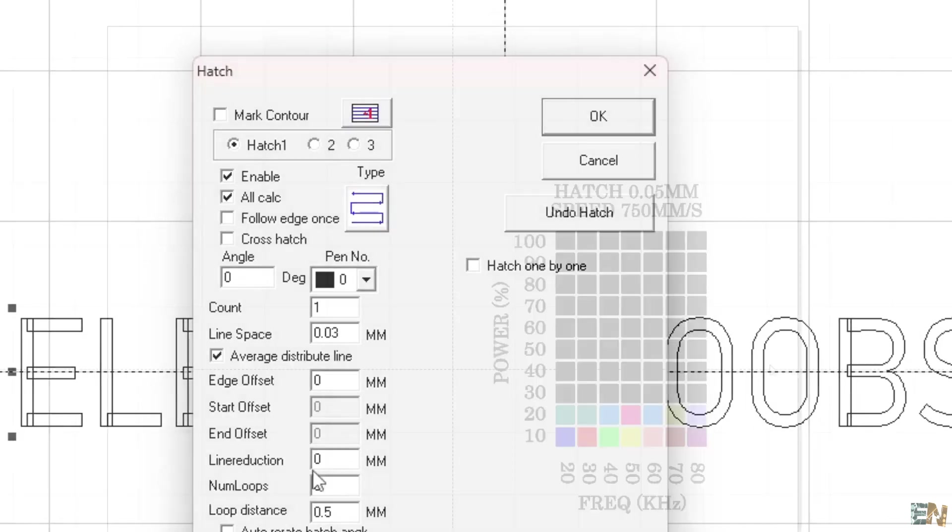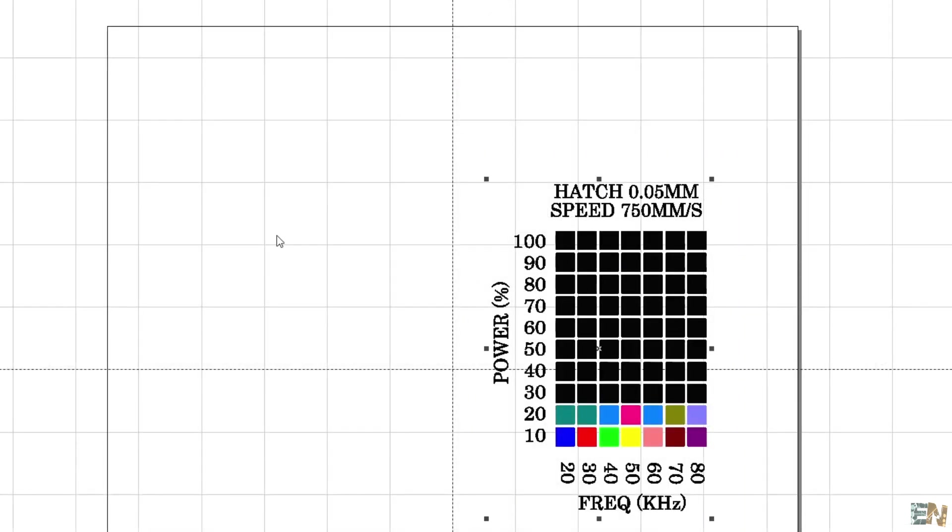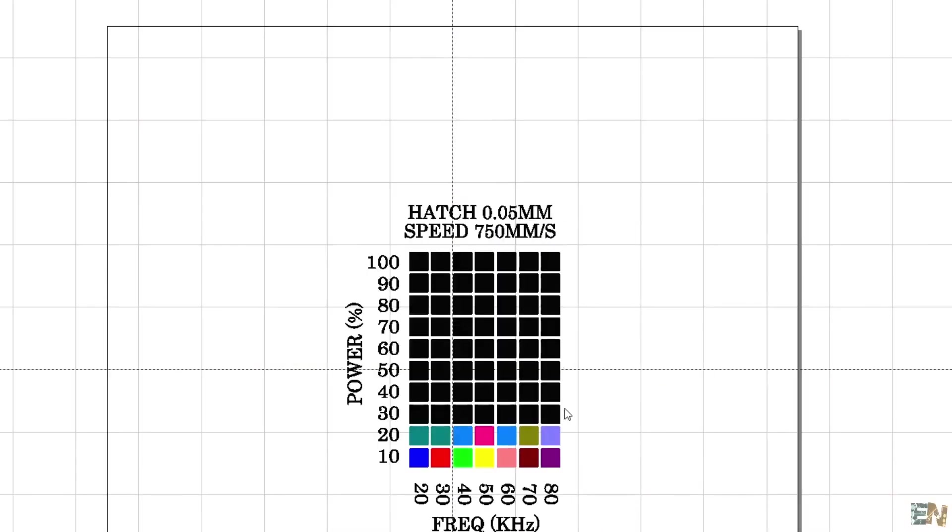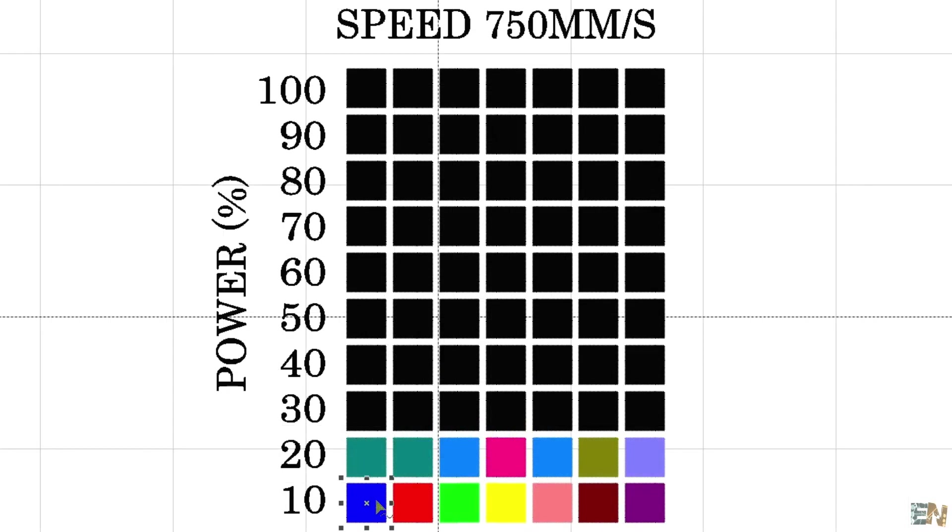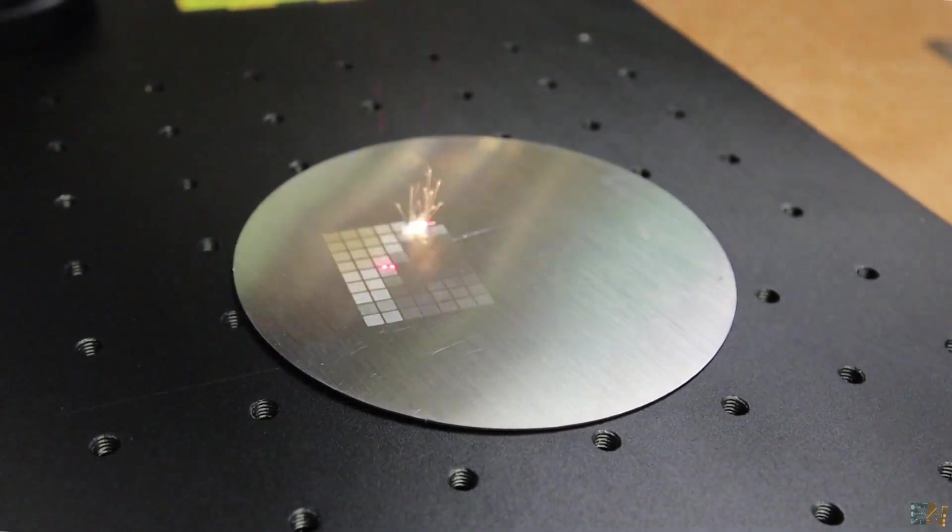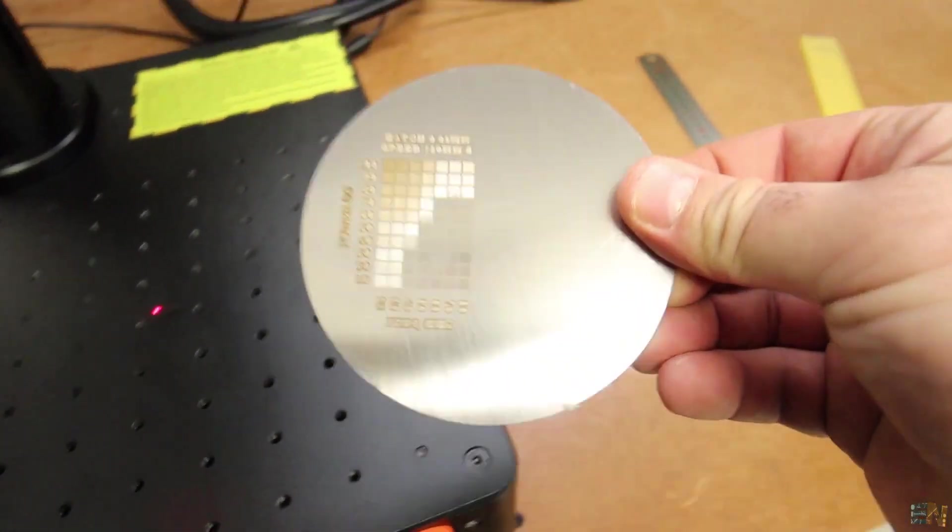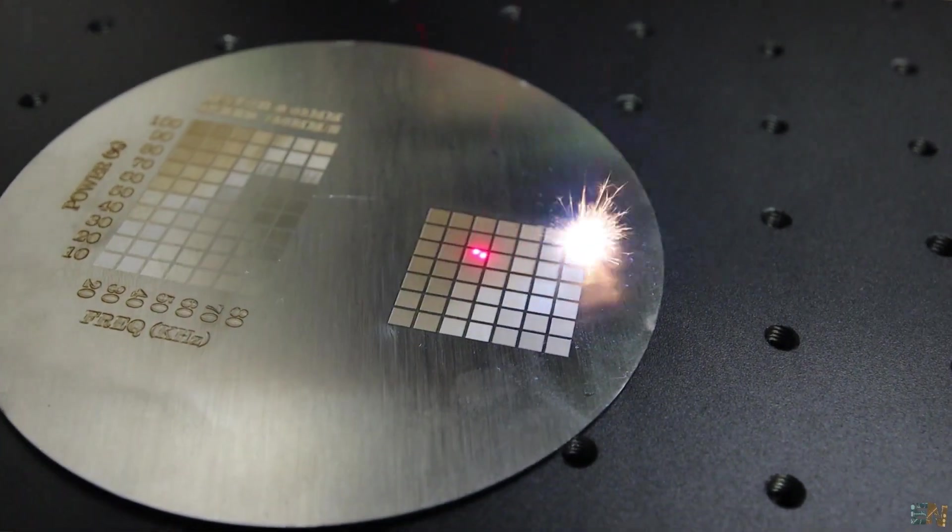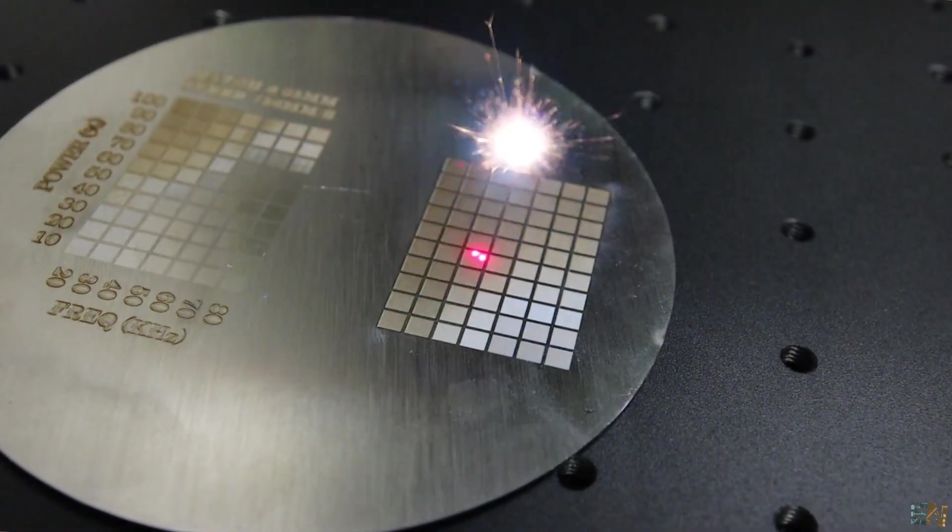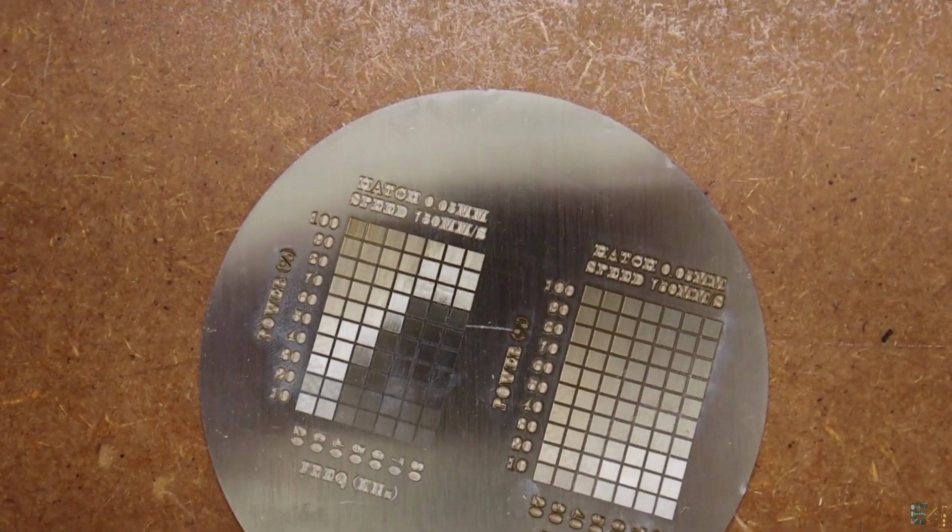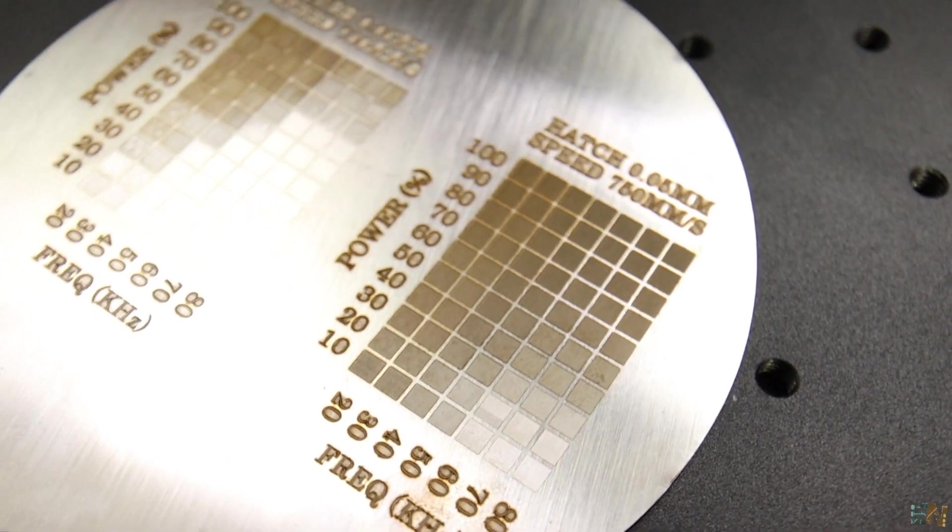The first test I wanted to make was on stainless steel and I wanted to make a graph for power versus frequency. For each square here, I have a different configuration of the power and the frequency. I test this on stainless steel and here are the results. The first attempt was not well focused so I've made the engravement once again. And how interesting, depending on the frequency, the created oxide color is different.